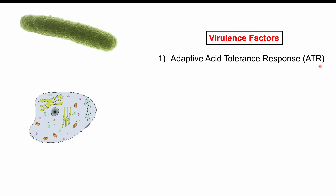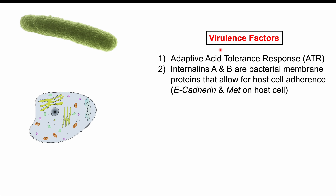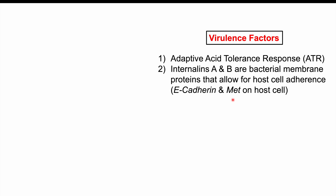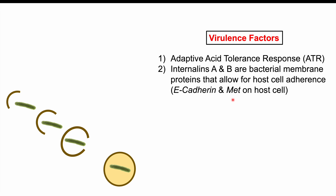Once Listeria enters the host, it has bacterial membrane proteins on its surface called internalin A and internalin B. Internalin A allows the bacteria to bind to E-cadherin on host cells, while internalin B binds to the MET receptor on host cells. This adherence allows the host cell to take up and engulf the bacteria in a vacuole.